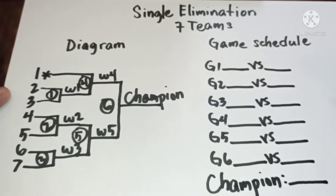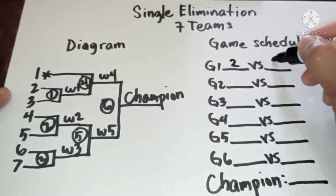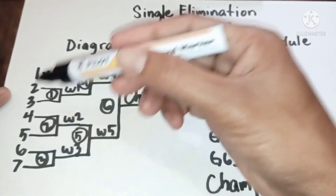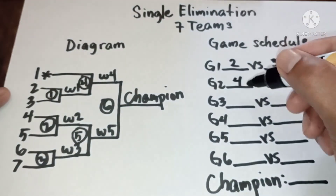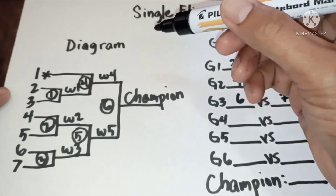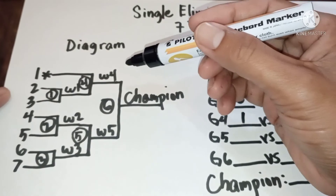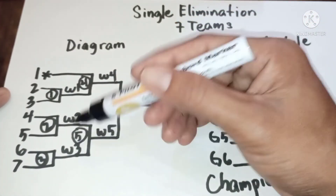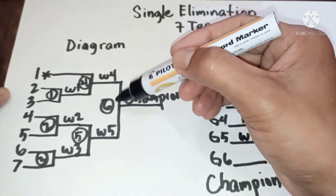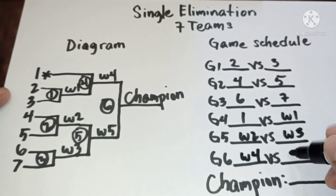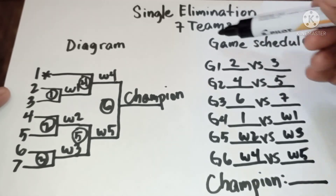Now let's interpret the diagram. In game one we have two versus three. In game two we have four versus five. In game three we have six versus seven. In game four, one versus winner one. In game five, winner two versus winner three. In game six, winner four versus winner five — and then champion. This is the diagram and game schedule for seven teams.